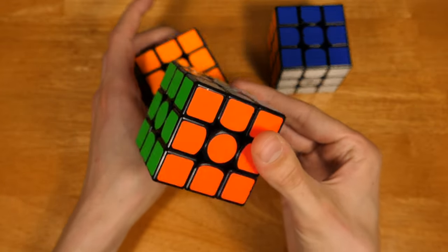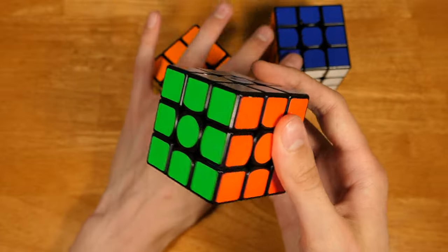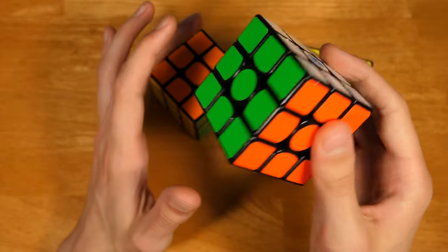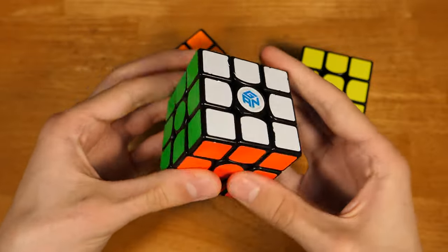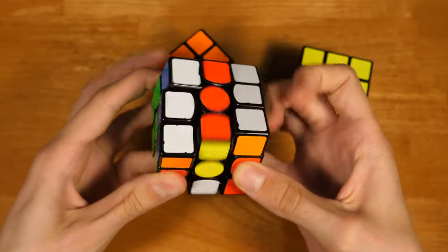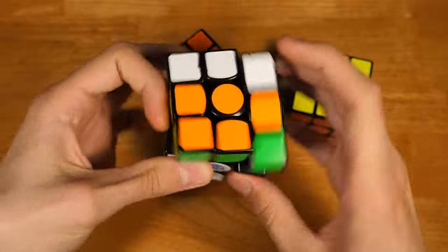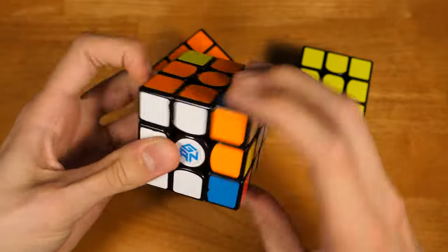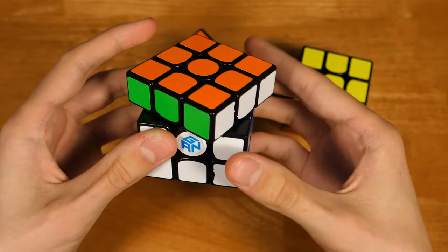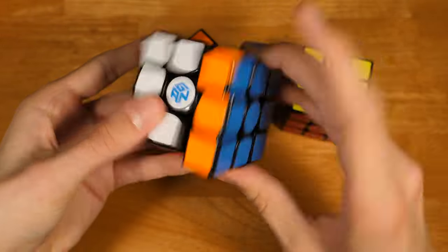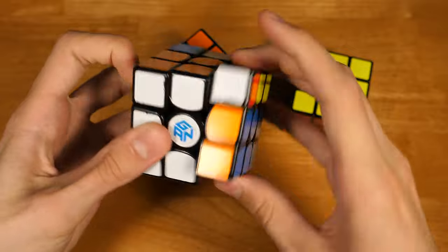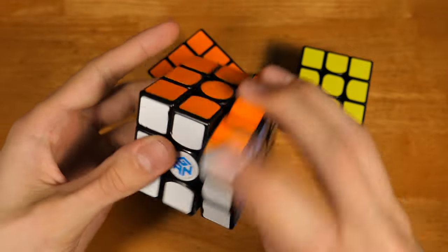First off I have the Gan 356 Air-UM. In the title you know that this is a 56mm cube with extreme stability and controllability. It's just really reliable when you're doing solves at home. The corner cutting is top-notch, this thing is such a high performance cube, and I really enjoy the smooth feeling.